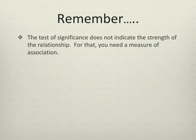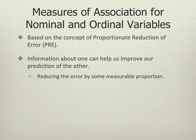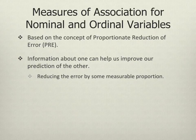Now that we've determined our relationship exists, the question is how strong is it? Our test of significance didn't tell us anything about the strength of the relationship. For this, we need the appropriate measure of association. Measures of association for nominal and ordinal variables are based on the concept of proportionate reduction of error, often referred to as PRE measures. What we mean by this is that information about one variable can improve our prediction of the other. If I know your score on the independent variable, I'll make a better guess at what your score on the dependent variable is likely to be — I've reduced the error by some measurable proportion. The better my guess gets if I know your score on the independent variable, the stronger the measure of association is going to be.